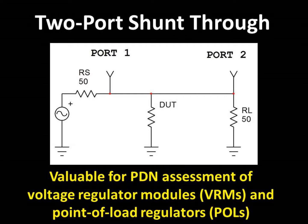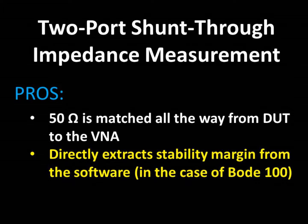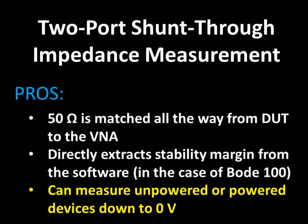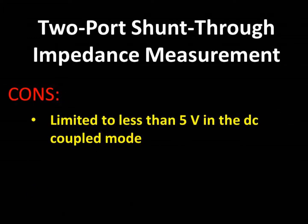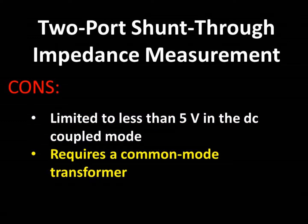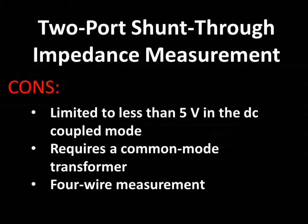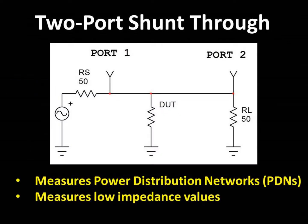The Bode 100 can directly display stability and Q information as a cursor measurement, and like the single-port measurement, can be performed at 0 volts and also up to 5 volts. Depending on the analyzer used, a common mode transformer is often used to improve the low-frequency fidelity of two-port shunt-through impedance measurements. For those interested in learning more about measuring PDNs or measuring low impedance values in general, there are many articles and application notes on these topics, and a few are listed in the reference section at the end of this presentation.